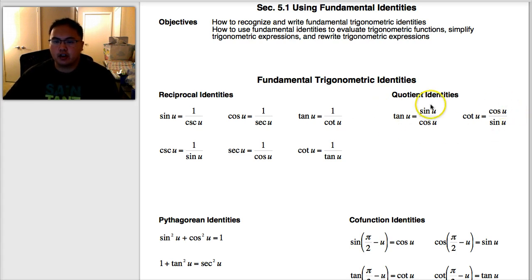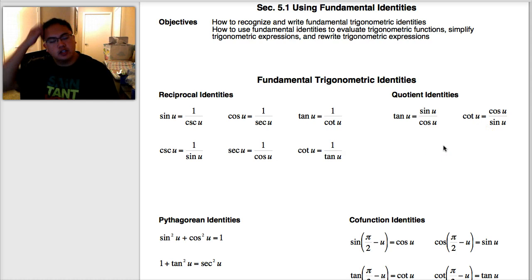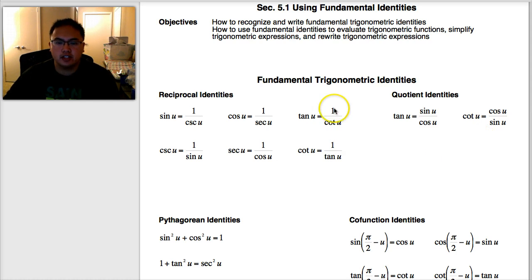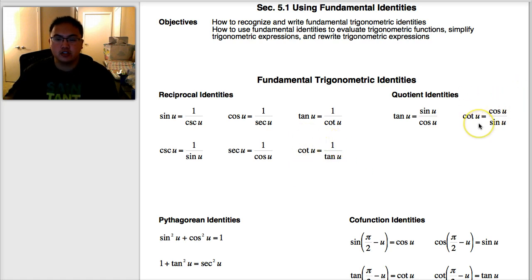You've heard these before but may have forgotten. You know that tangent is sine over cosine. And if cotangent is the flip, cotangent is cosine over sine. So for tangent and cotangent, there are actually two identities you need to know. Tangent is one over cotangent, and also sine over cosine. Cotangent is tangent flipped, and also cosine over sine.